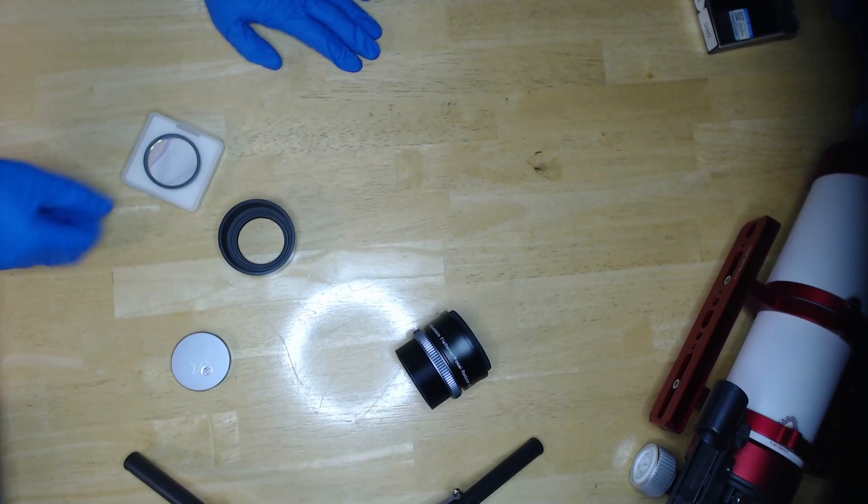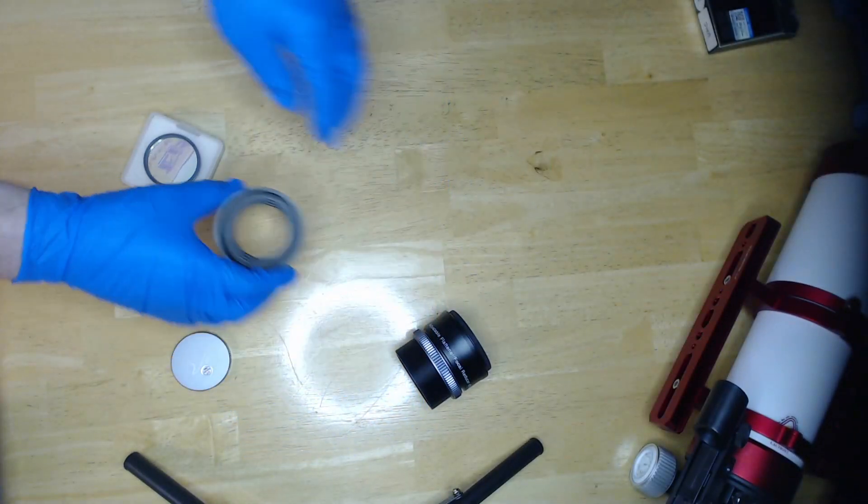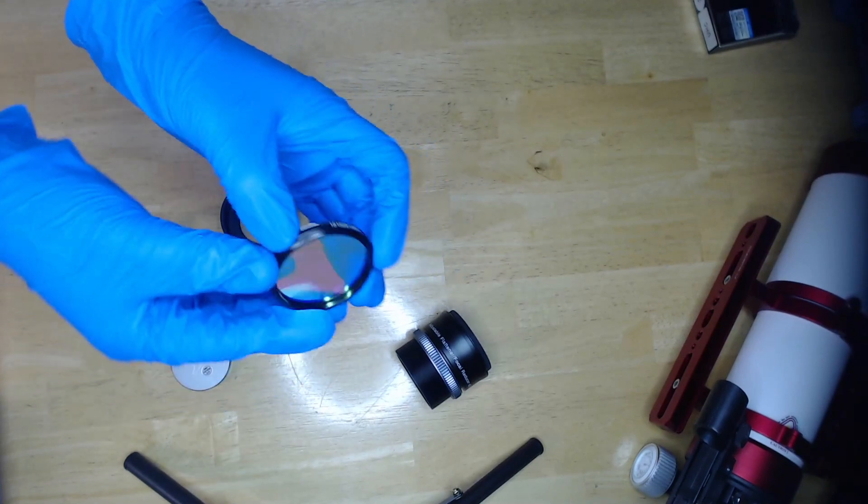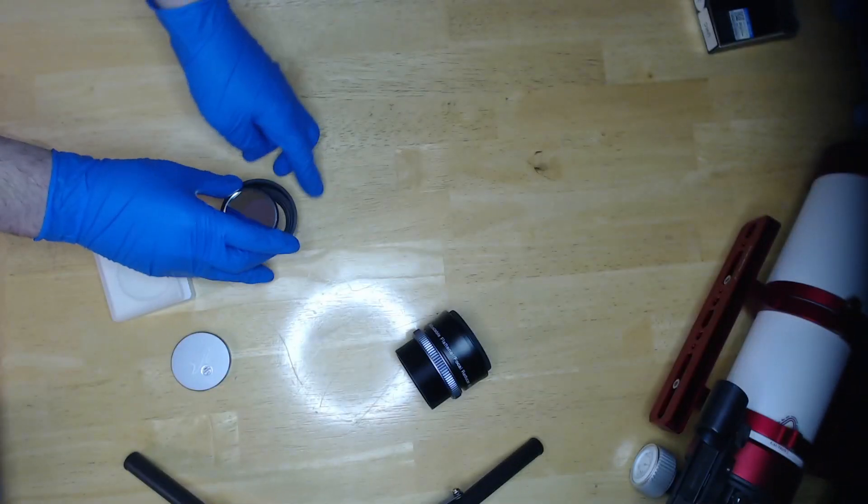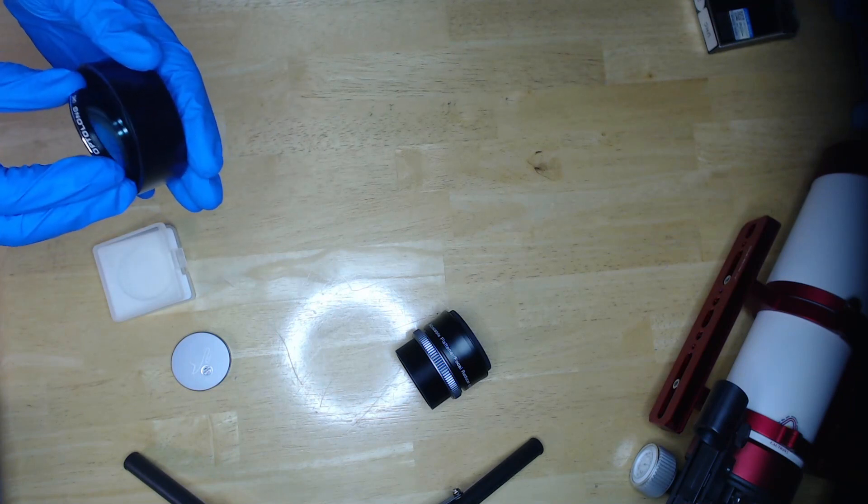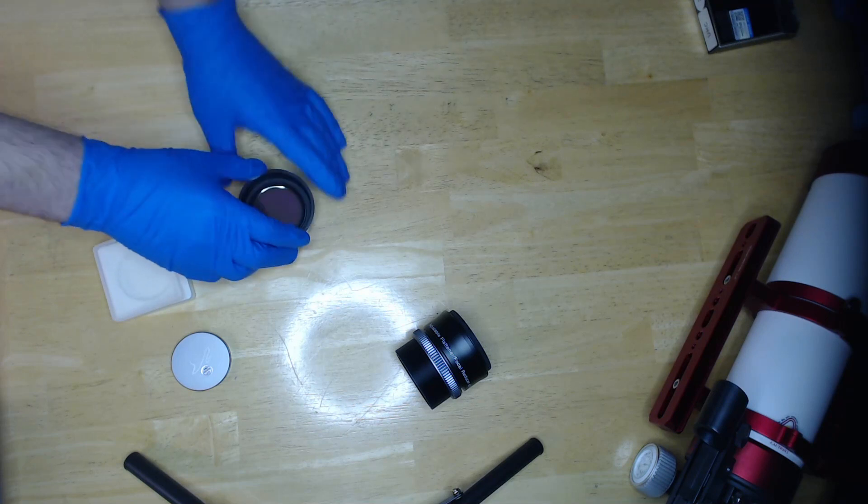We can set this aside now. We're only going to work with this cap. On the inside, it has a ring of threads specially designed for filters that should match the filter threads at the bottom of the filter. Mating these two is quite difficult due to the cap's thickness, but try your best to align it.